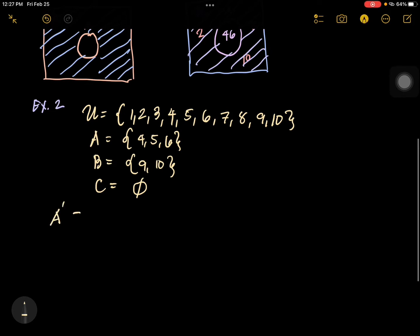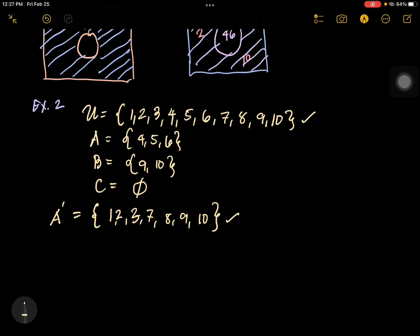What is A complement? The answer is {1, 2, 3, 7, 8, 9, 10}, because these elements are in the universal set and are not inside set A. So we cancel 4, 5, and 6 from the universal set, and what is left is 1, 2, 3, 7, 8, 9, 10.